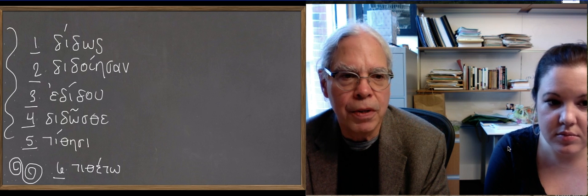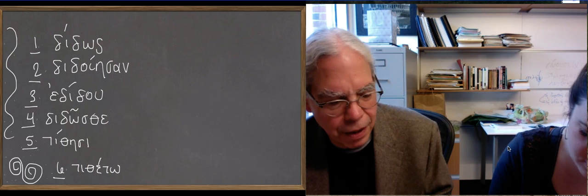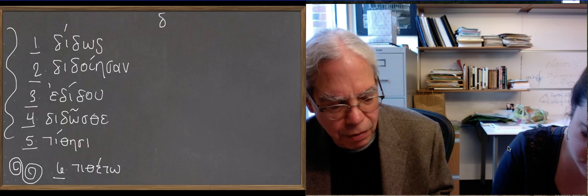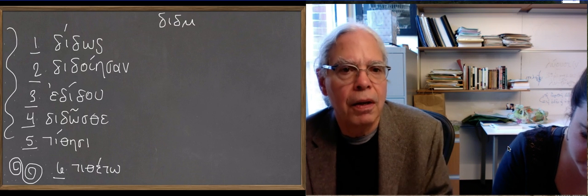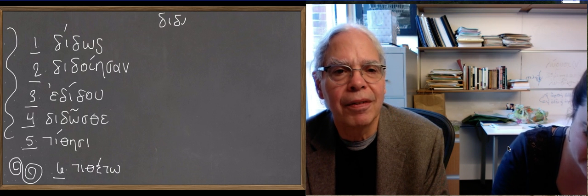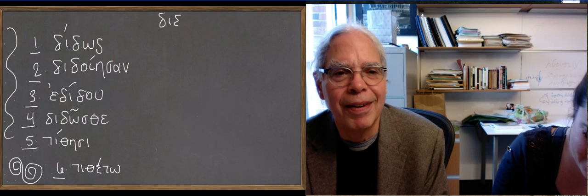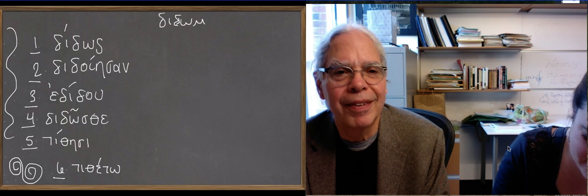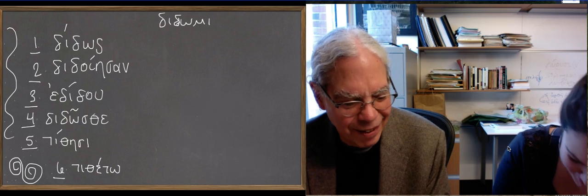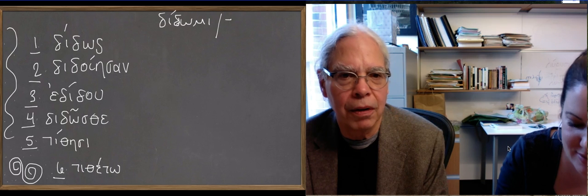One is the verb δίδωμι. You can write that up there, maybe you'll erase it over here on the right hand side of the blackboard, just write δίδωμι. Okay, there's an accent. And the other verb we're going to do is τίθημι.